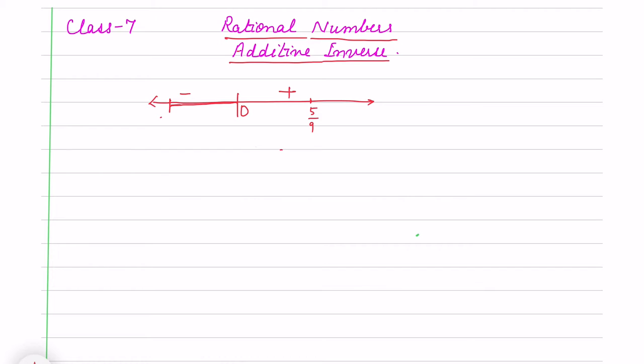Suppose 5/9 is on this side, the right-hand side of 0. The additive inverse will be -5/9, or you can say it is a mirror image like that.